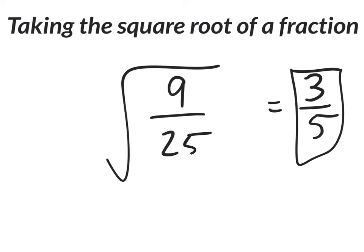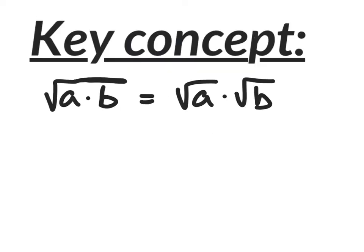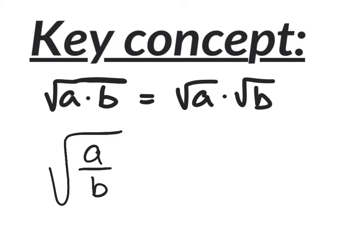In order to explain this, I need to go back to the key concept that we learned yesterday, which was the square root of a times b equals the square root of a times the square root of b. What this was is where you were multiplying two numbers on the inside of a radical, you could take this radical and split it to each of the terms that you were multiplying by. It's the same thing today when we have the square root of a divided by b — we're going to be able to take the radical and split it to the top and the bottom. So the square root of a over b is really the square root of a divided by the square root of b.